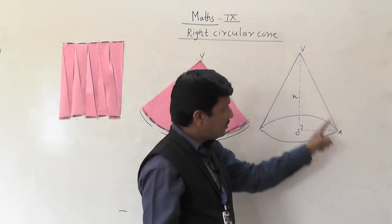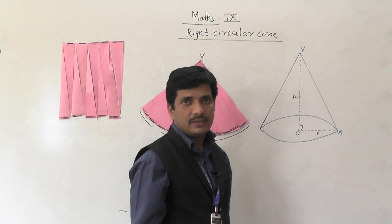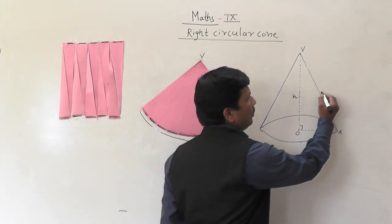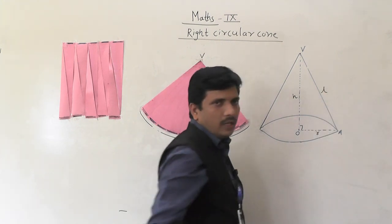And VA — this is also a height but this is the slant height of the cone. So that will be denoted by small l.